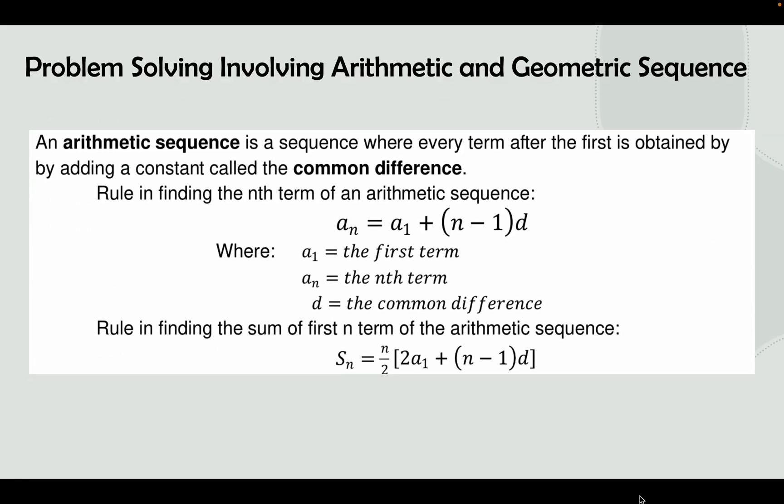Before we proceed to our examples about problem solving involving arithmetic and geometric sequences, let us recall first what is an arithmetic sequence. An arithmetic sequence is a sequence where every term after the first is obtained by adding a constant called the common difference. The rule in finding the nth term of the arithmetic sequence is: a sub n equals a sub 1 plus (n minus 1) times d, where a sub 1 is the first term, a sub n is the nth term, and d is the common difference. We also have the rule for finding the sum of the first n terms: S sub n equals n over 2 times (2 times a sub 1 plus (n minus 1) times d).